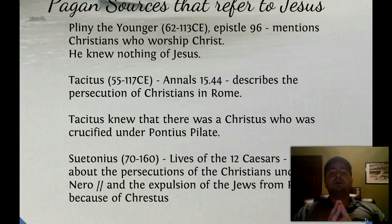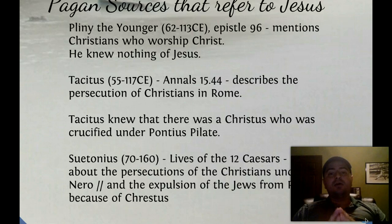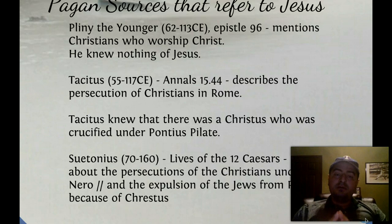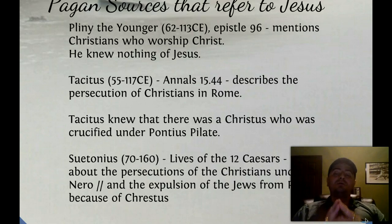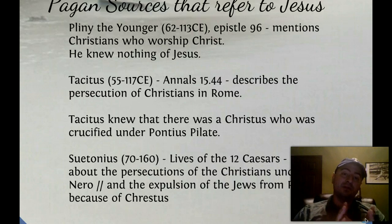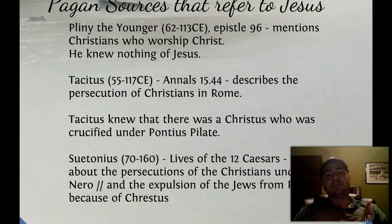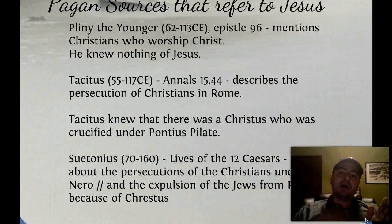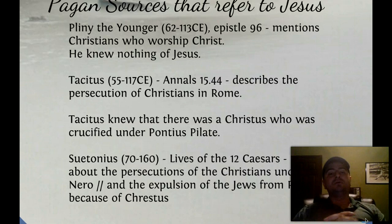The test Pliny came up with was that Christians were to deny Christ and sacrifice an offering to a pagan god — he said no Christian could do this. He wrote Epistle 96 to the Emperor Trajan to make sure he was doing the right thing, and Trajan wrote back and said yes, you're doing exactly what you need to do.